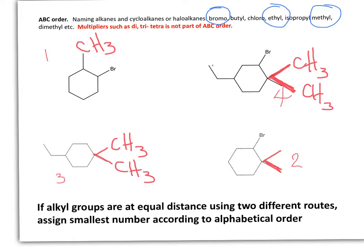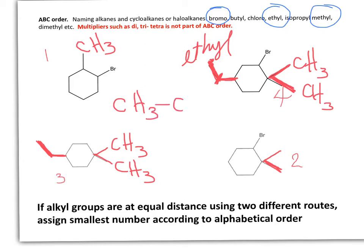Now this one is not a methyl. It is a 2-carbon long skeletal alkyl group, so this one is a CH2 right here and a CH3 right here — so this one is an ethyl group. This here is also an ethyl group. Please remember that this is a primary alkyl substituent ethyl group.